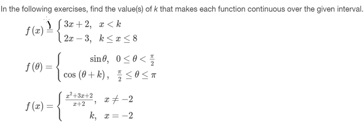The first one: we know that if we put K in here and K in here, we get 3k plus 2 and 2k minus 3.